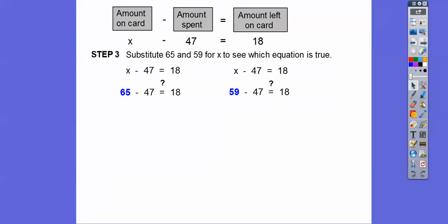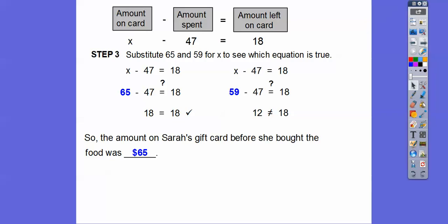So let's substitute those in. So 65 minus 47, what's that equal? Well, that equals 18. And then if we did 59 minus 47, that only equals 12. So the amount on the card that Sarah had before she bought food was that $65 right there.